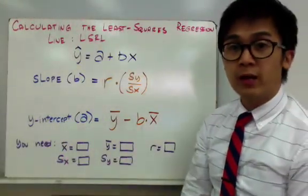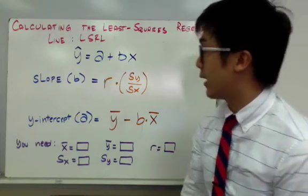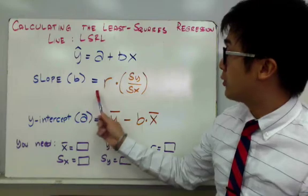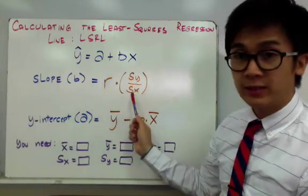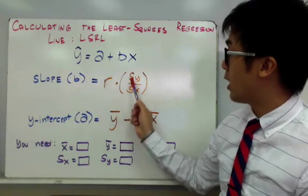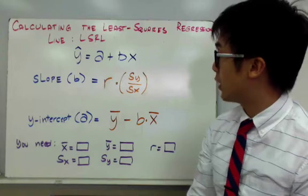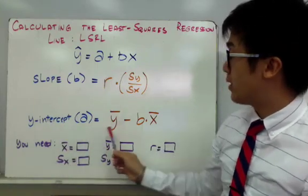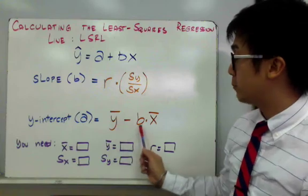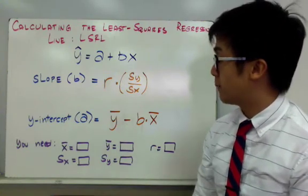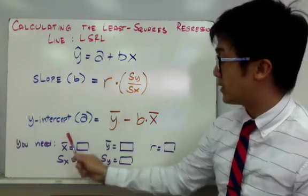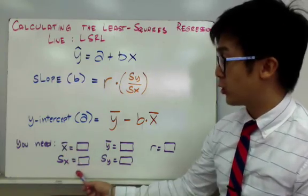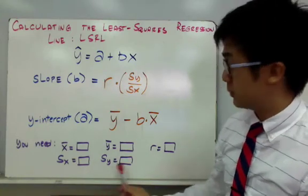In computing for the LSRL given the numerical summary, we will use a formula to find the slope and the y-intercept. The slope is found using the formula b equals r times s_y over s_x, where r is the correlation and s_y and s_x are the standard deviations of the response variable and the explanatory variable. After computing the slope, we find the y-intercept using the formula: mean of y minus b times the mean of x. To use this formula, we need five values: the mean and standard deviation of the explanatory variable, the mean and standard deviation of the response variable, and their correlation.